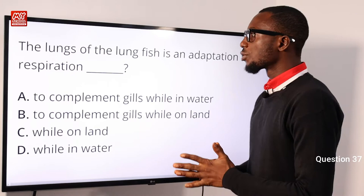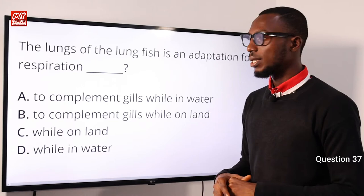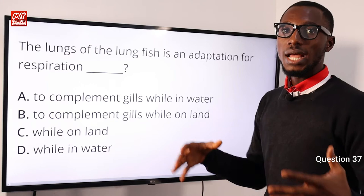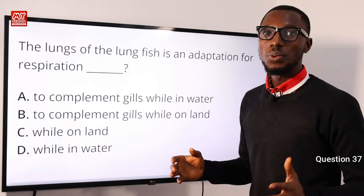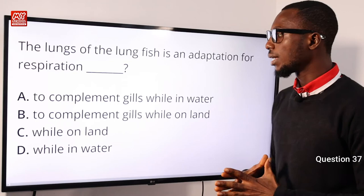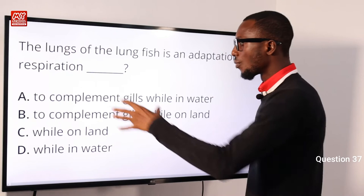Question 37: The lungs of the lungfish are an adaptation for respiration to complement the gills while they are on land or during estivation in the dry season. Just like every other fish, the lungfish also possesses gills, which they use for breathing when in water. In cases where there is a drop in oxygen level in the water, or when they are on dry land, they use their lungs to breathe.